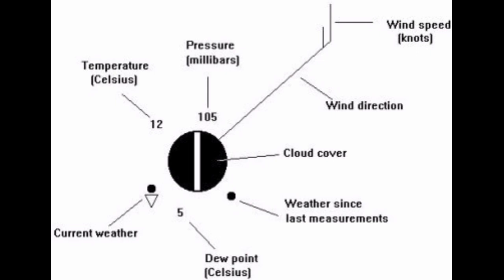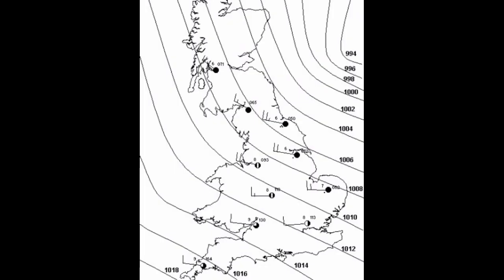Others, like occurrence of rain, snow, cloud, and fog, are plotted as internationally agreed symbols. When plotting of the meteorological observations is completed, the forecaster then proceeds with the synoptic analysis of the chart.